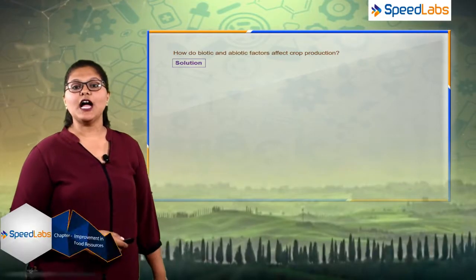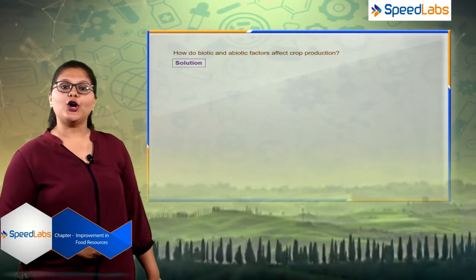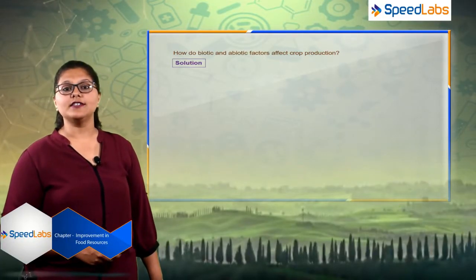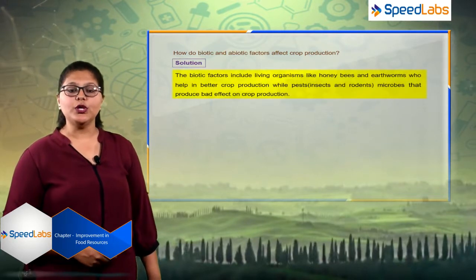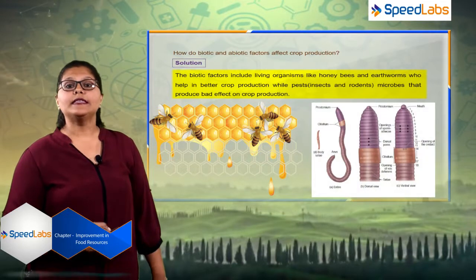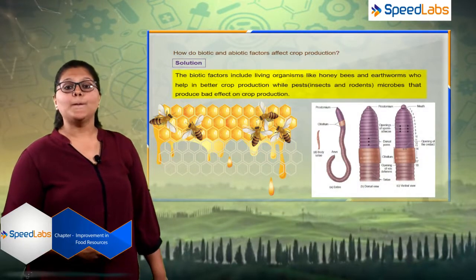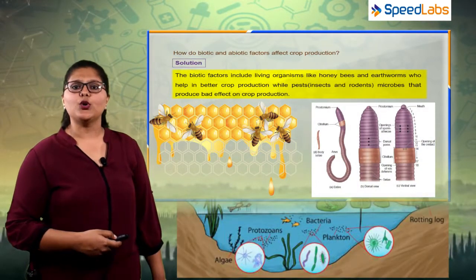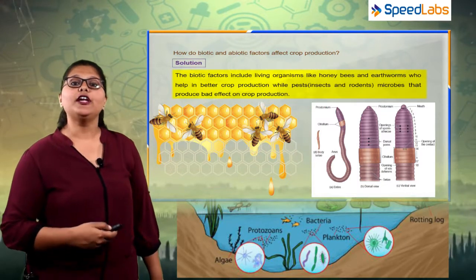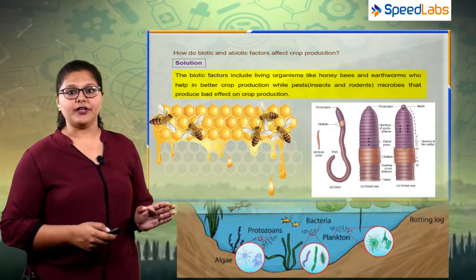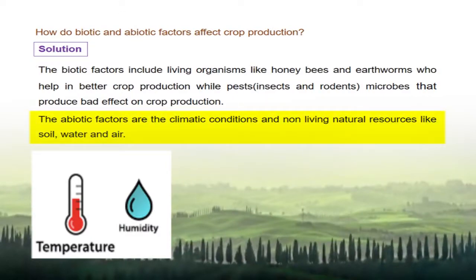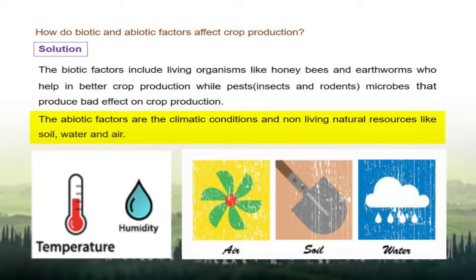The next question is: how do abiotic factors and biotic factors affect crop production? The biotic factors, which include honeybee and earthworm, help in crop production. But insects, pests, rodents, and bacteria feed on grains and degrade the quality of grains. In abiotic factors, such as humidity, temperature, and non-living natural resources like soil, air, and water, these also affect crop production.